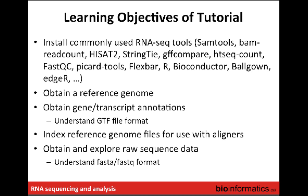Then we'll move into the RNA-seq specific stuff: obtaining a reference genome — we've created a bite-sized version of the human reference genome to work with. We'll obtain gene and transcript annotations, talk about where to get those kinds of annotations using human as an example, and then dig into the GTF file format, which is one of the most commonly used formats for representing transcript annotations. We'll index the reference genome files for use with the aligners, and then obtain the raw sequence data to use for downstream analysis.